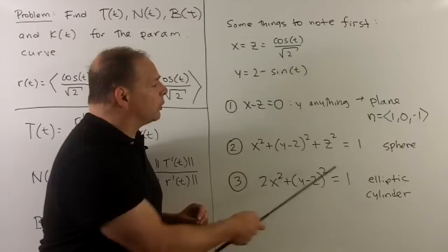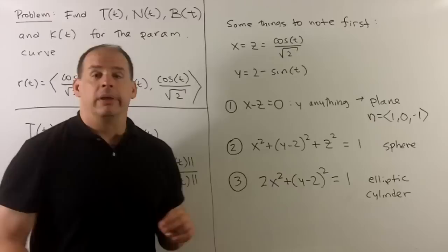Finally, I also have 2x² + (y-2)² = 1, which is the equation of an elliptic cylinder. And we'll see when we cut this elliptic cylinder with the plane, we're not going to get an ellipse, we're going to get a perfect circle.